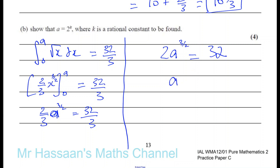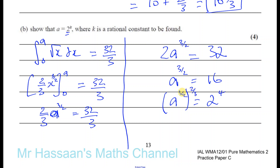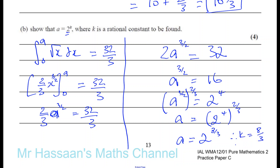Dividing both sides by 2 gives A to the power of 3 over 2 equals 16. We want to express this in terms of 2 to the power of something, so rewrite 16 as 2 to the power of 4. Raising both sides to the power of 2 thirds — the reciprocal — the powers multiply and cancel on the left giving A to the power of 1. So A equals 2 to the power of 4 times 2 thirds, which is 8 over 3. Therefore k equals 8 over 3, which is a rational constant.